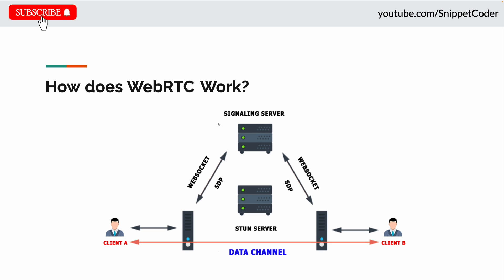How does WebRTC work? We have Client A and Client B who want to communicate. They use a signaling server and a STUN server. Client A determines all possible ways the public can connect to it, and Client B does the same. They signal session information — SDP — to each other via WebSocket or HTTP. Client A then connects to Client B via the most optimal path using ICE. They also exchange supported media types and security information, and then a connection is established.